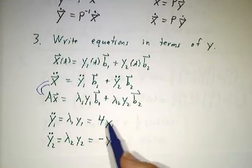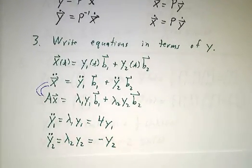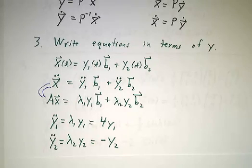And in this case, the first eigenvalue is 4, the second value is -1, and we have our equations. An equation for y1, an equation for y2, and they're decoupled.